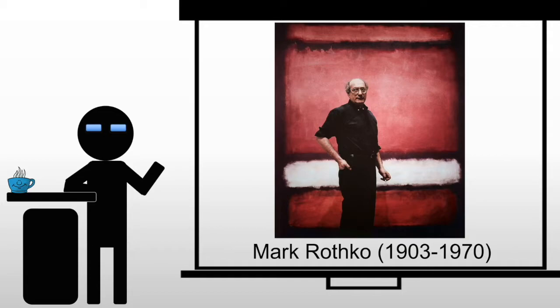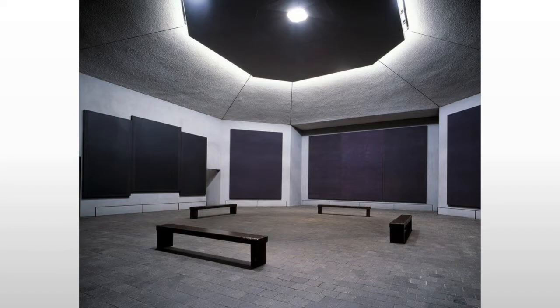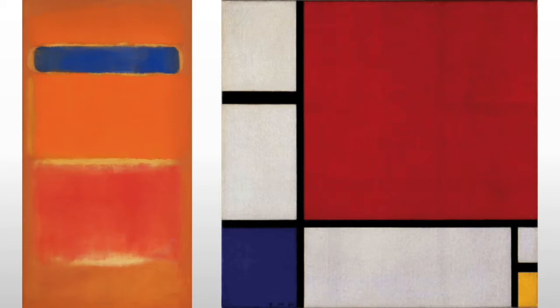Mark Rothko was born in Russia and moved to the United States at the age of 10. He began as a figurative artist, but soon began to believe that references to anything in the physical world conflicted with the sublime idea of the universal. He will focus on color to convey a sense of meaning, eliminating any cultural reference that someone from another society wouldn't understand. His focus is on the emotional resonance that color inherently holds.